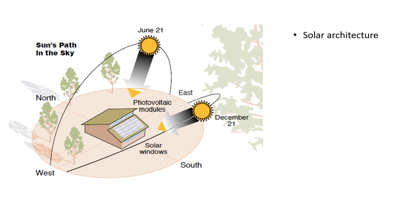Next in the list is solar architecture, which we have seen in our first lecture. Here we revisit a few points. The architecture of houses is built according to the altitude of the sun in the sky. Houses in cold climate regions are erected with doors and windows facing southwards, so as to receive more solar rays for longer duration to keep the interiors warm.